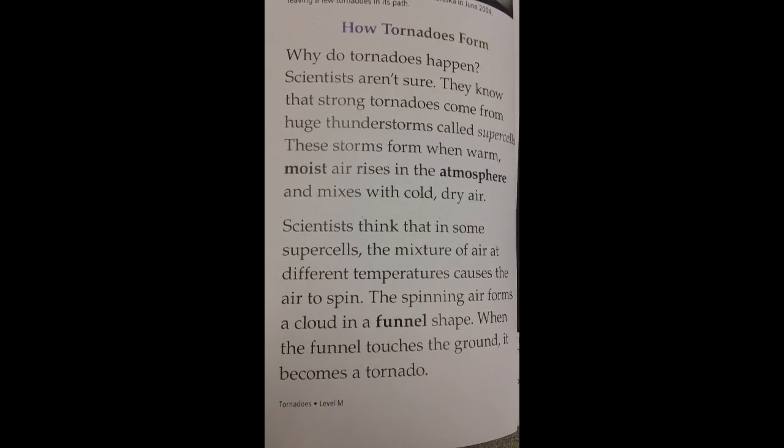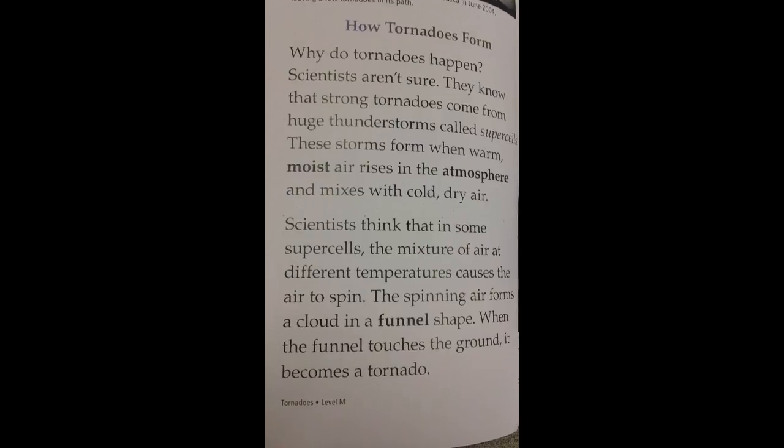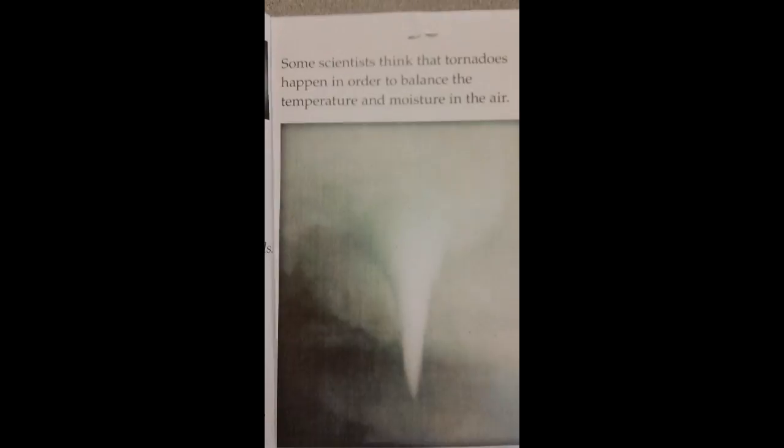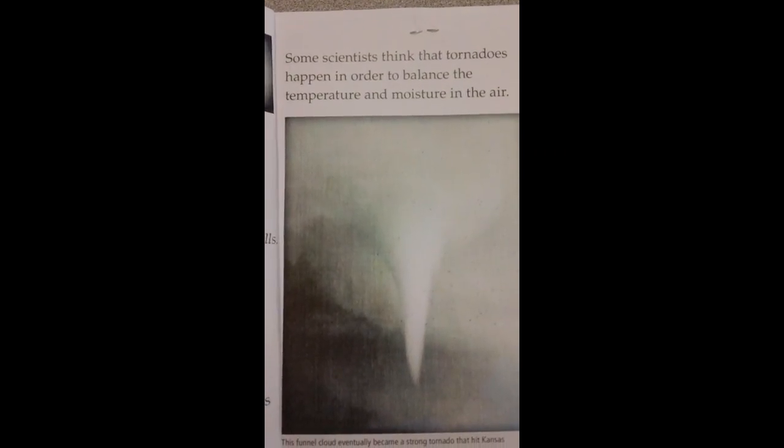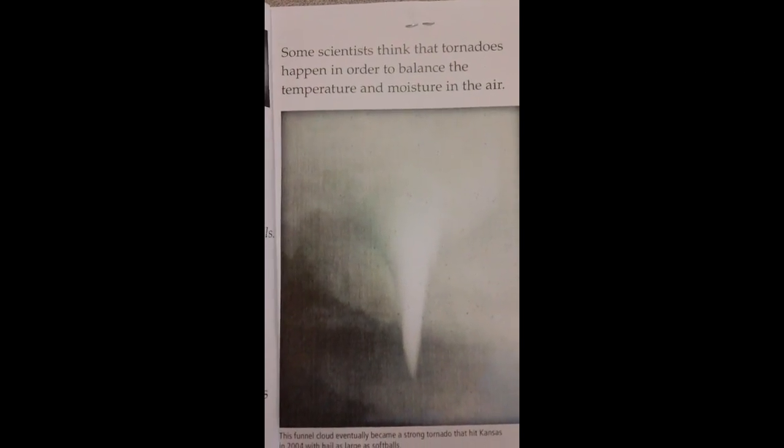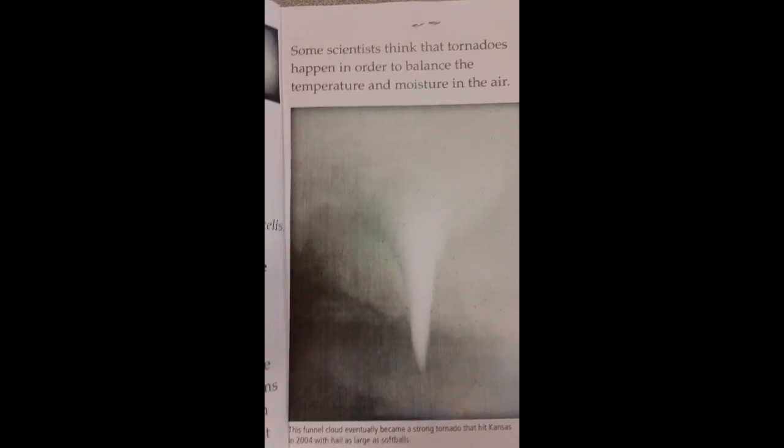The spinning air forms a cloud in a funnel shape. When the funnel touches the ground, it becomes a tornado. Some scientists think that tornadoes happen in order to balance the temperature and moisture in the air. A funnel cloud eventually became a strong tornado that hit Kansas in 2004 with hail as large as softballs.